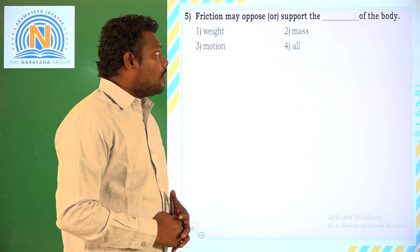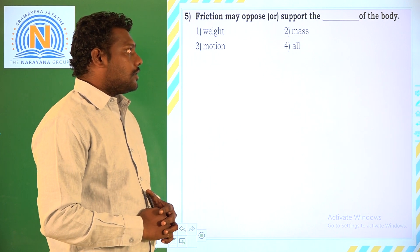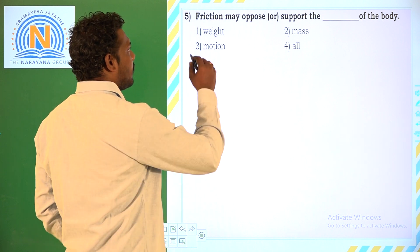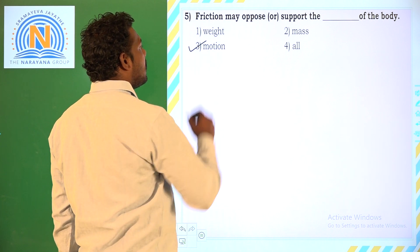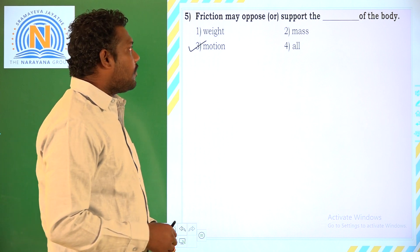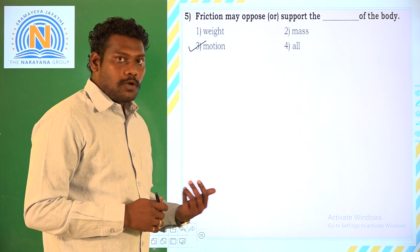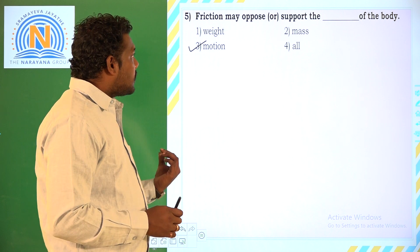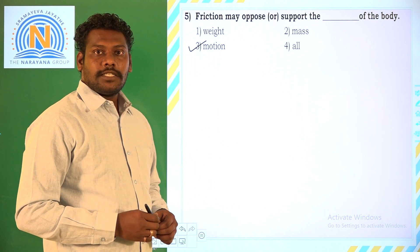Friction may oppose or support what of the body? Weight of the body or the mass of the body or motion of the body? It supports or opposes the motion of the body. Frictional force is a force which may oppose or support the motion of the body. This is the assignment for these days, students. We will meet in the next session. Thank you.